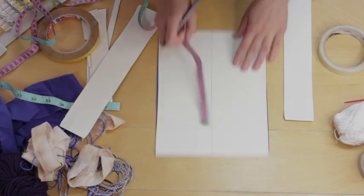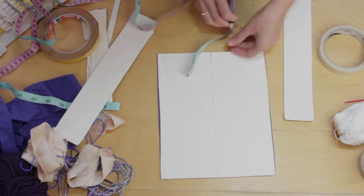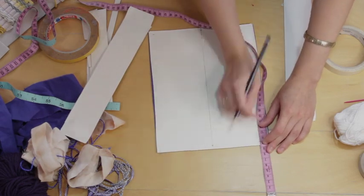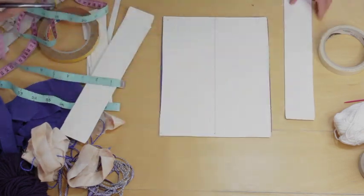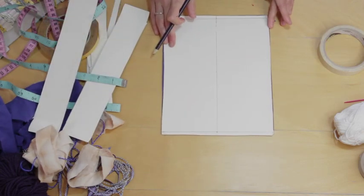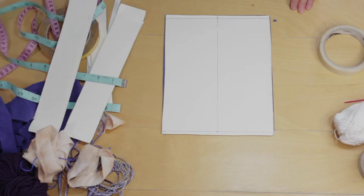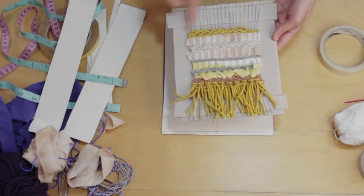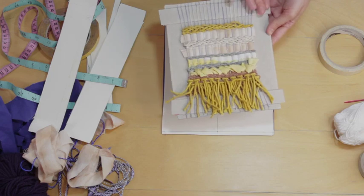Now we're going to measure about a half a centimeter from each end and give ourselves a line that we're going to snip up to which will help us mark it out. When you're weaving, you don't want to weave too close to the edge of your board, you need to give yourself a bit of space.